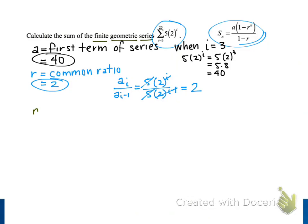The variable n represents the number of terms that we are adding up in our series. We didn't start with i equals 1 for our first term, so we can't just use 25, the upper limit, for our n value. Instead, n is equal to the upper limit, 25, and then we subtract 1 less than the lower limit, so we subtract 3 minus 1.